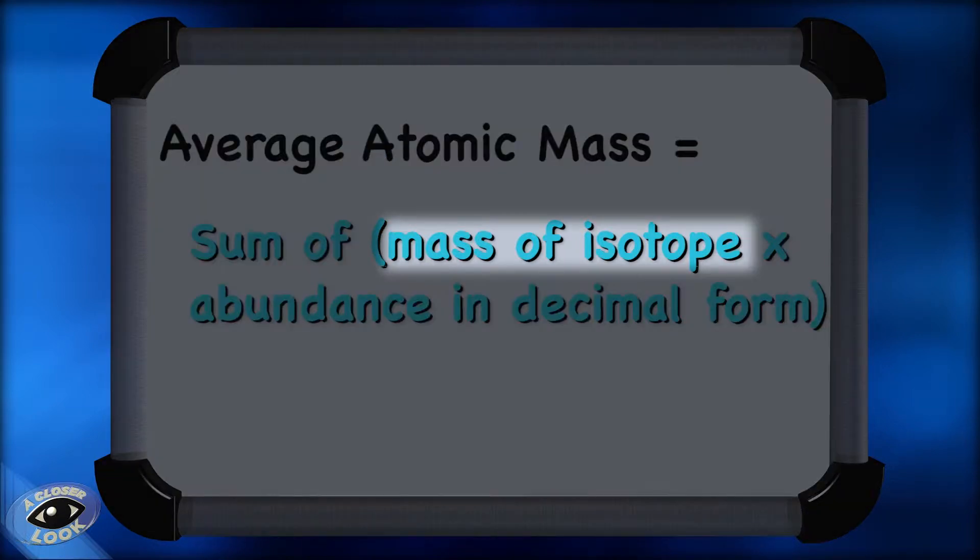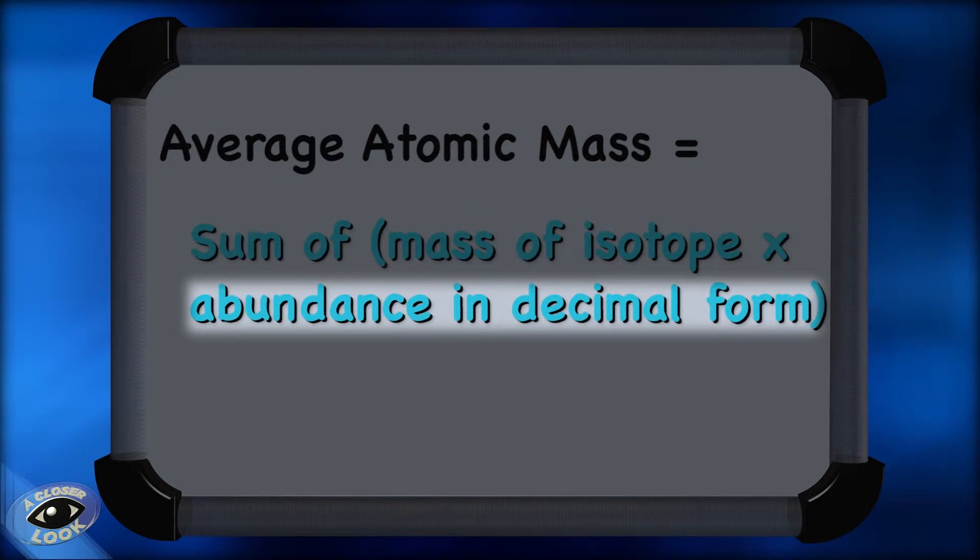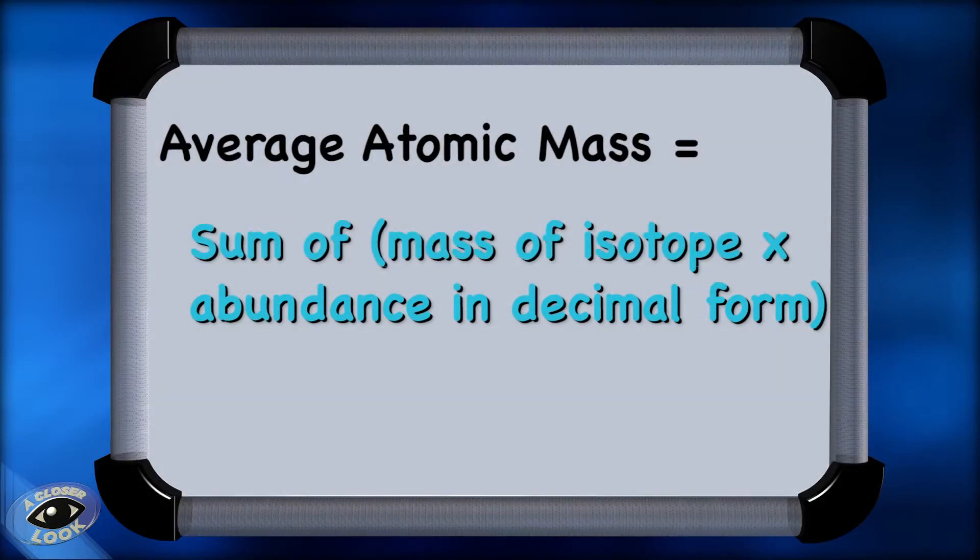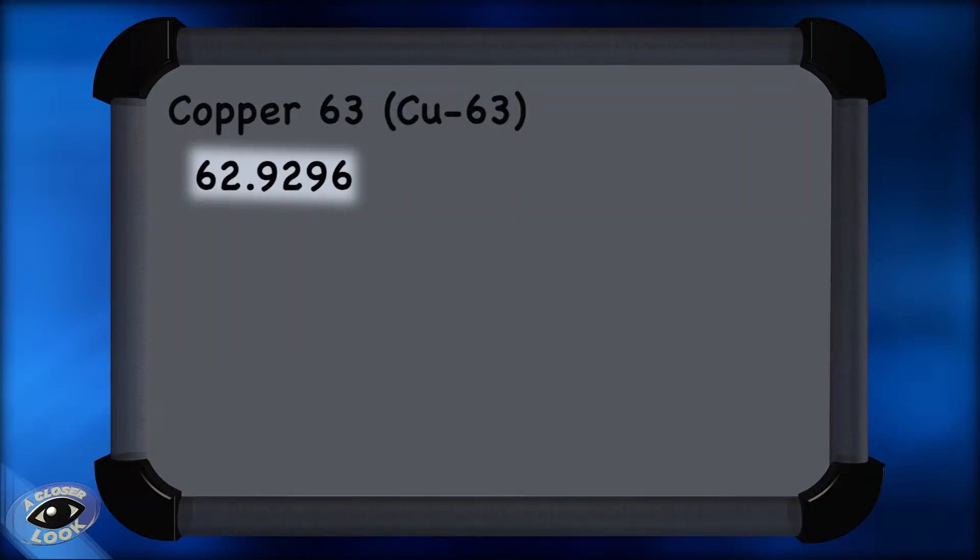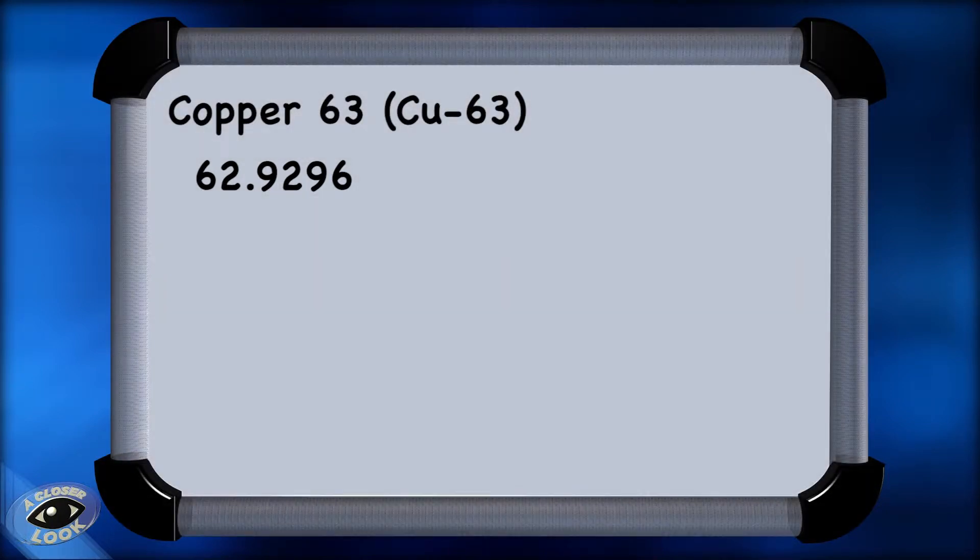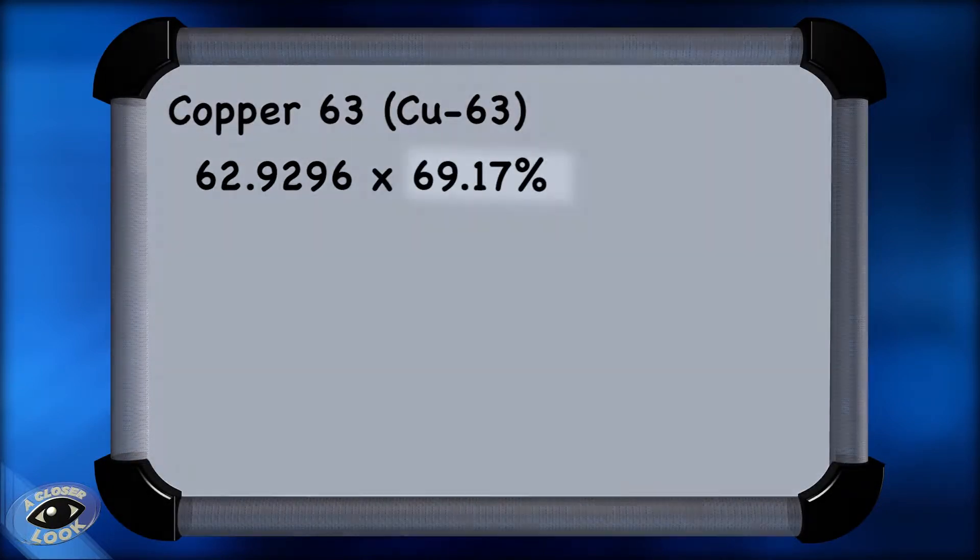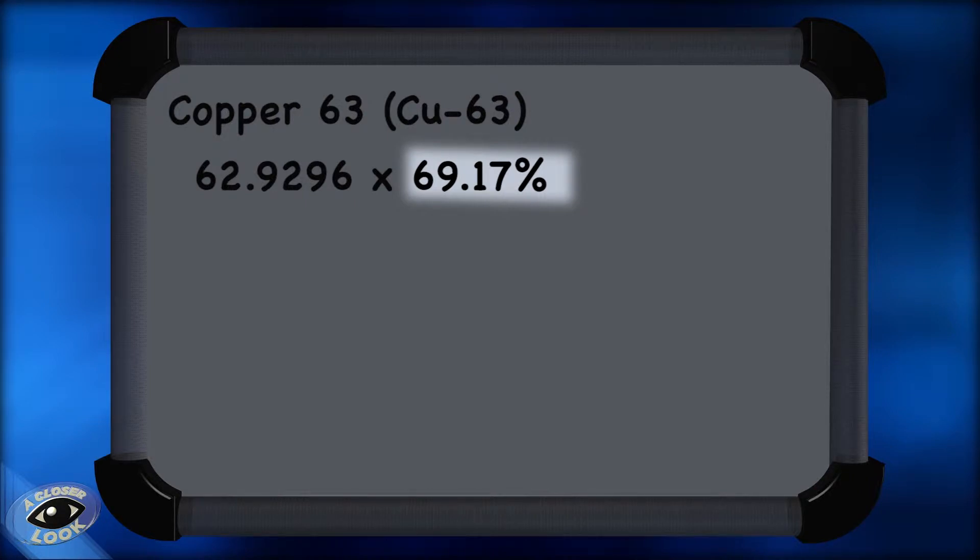We'll take the mass of the isotope times the abundance in decimal form. So the first isotope that we're dealing with is copper-63, whose exact mass is 62.9296 AMU. We take that mass and we multiply it by the relative abundance, which we saw as a percentage. But remember we want it in decimal form.